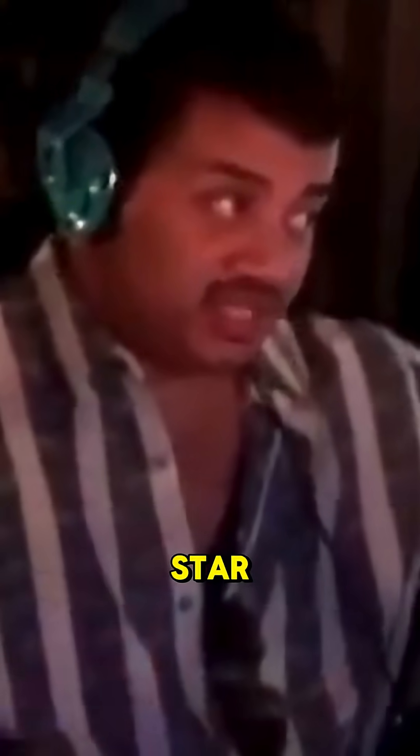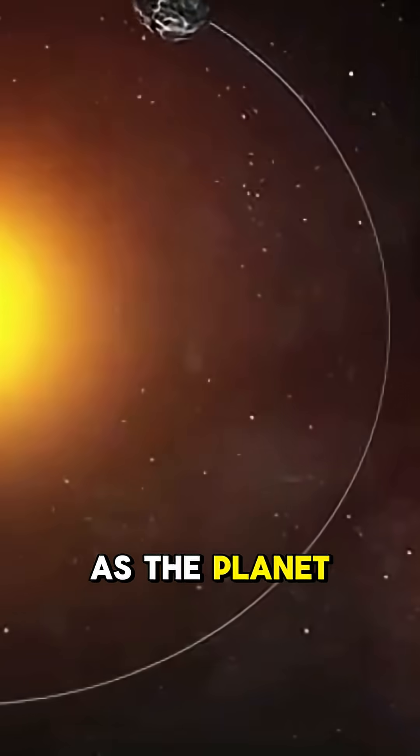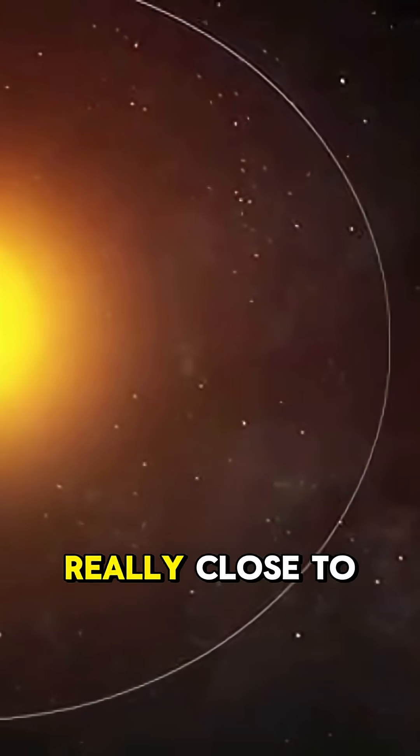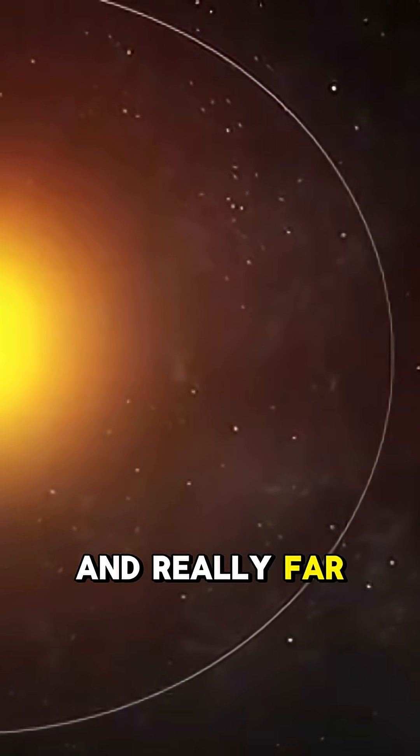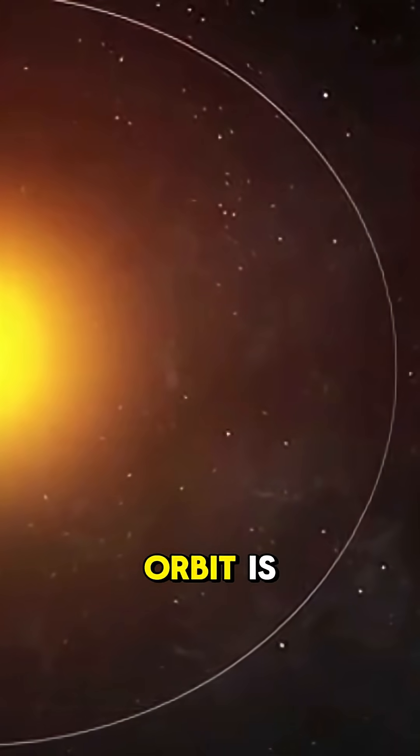But here's the challenge with a multi-star system. As the planet orbits, maybe it'll get really close to one star and really far from another. And maybe the orbit is entangled between the two of them, trying to do figure eights.